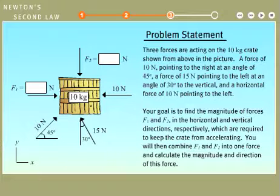Three forces are acting on the 10 kilogram crate shown from above in the picture. A force of 10 Newtons pointing to the right at an angle of 45 degrees, a force of 15 Newtons pointing to the left at an angle of 30 degrees to the vertical, and a horizontal force of 10 Newtons pointing to the left. Your goal is to find the magnitude of forces F1 and F2 in the horizontal and vertical directions respectively, which are required to keep the crate from accelerating. You will then combine F1 and F2 into one force and calculate the magnitude and direction of this force.